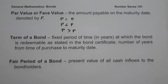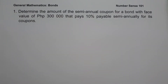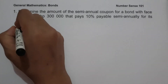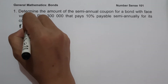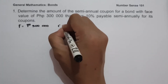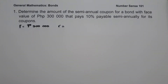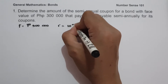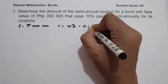Let's start with Example 1: determine the amount of the semi-annual coupon for a bond with a face value of 300,000 pesos that pays 10% payable semi-annually for its coupons. To solve the problem, let us identify the given. The face value is 300,000 pesos, and the coupon rate — the rate per coupon payment period — is 10% or 0.10 in decimal.